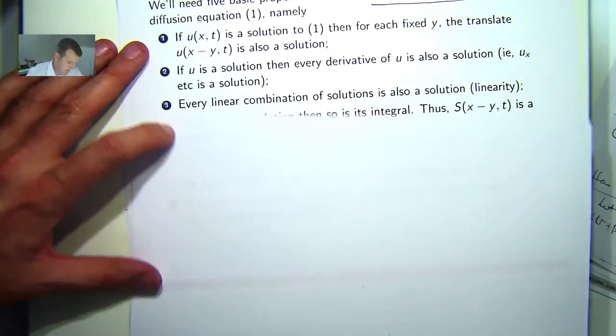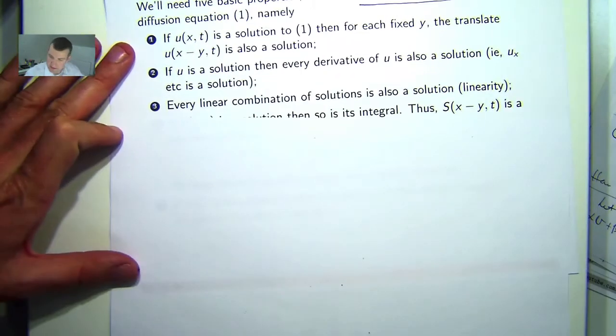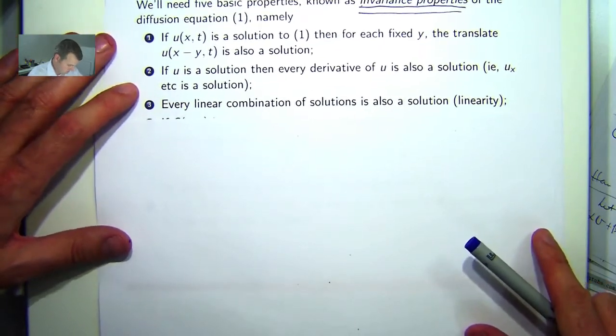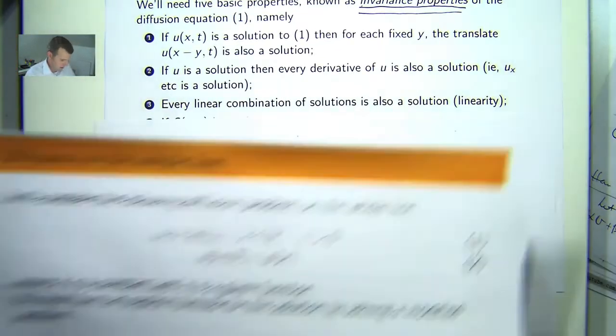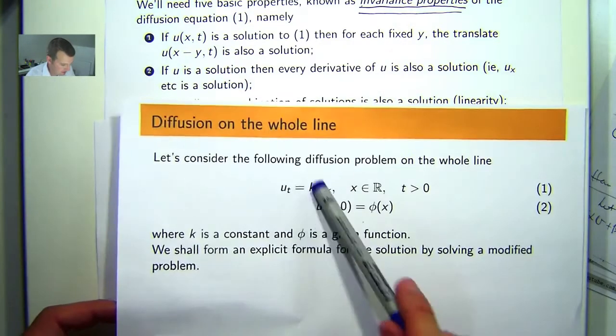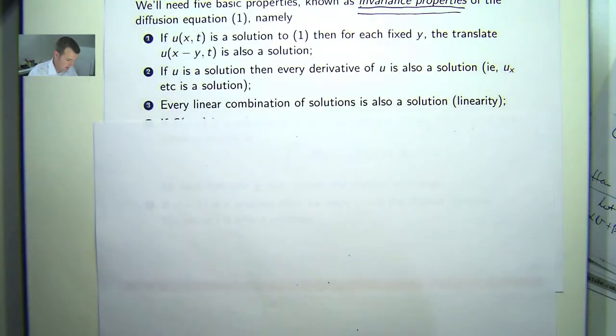Part 3. Every linear combination of solutions to 1 is also a solution. Now this just follows from the linearity of 1. But let's actually prove it.